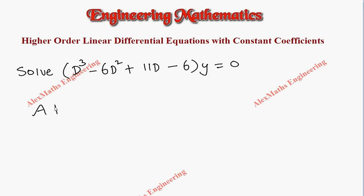First we have to write the auxiliary equation which is nothing but m³ - 6m² + 11m - 6 = 0.